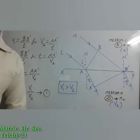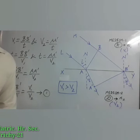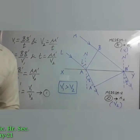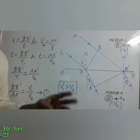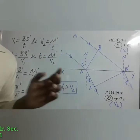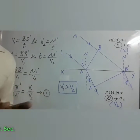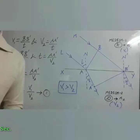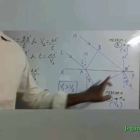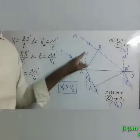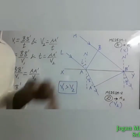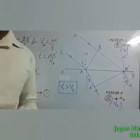Now we have to prove the laws of refraction. The first law states that the incident ray, refracted ray, and normal all lie in the same plane. Here, the incident rays, refracted rays, and normal are all in the same plane, so the first law is proved.